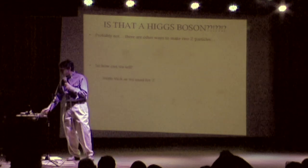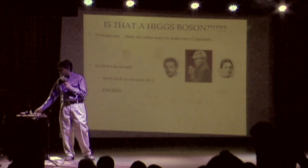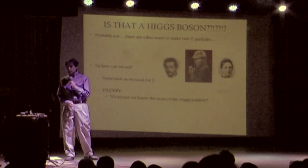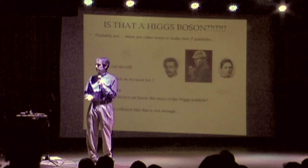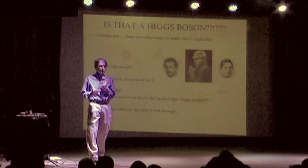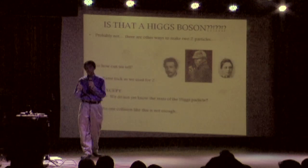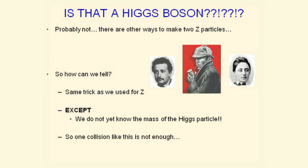So how are we going to figure it out? Well, we'd like to bring in the same team that was so successful for the Z particle and set them to work, and they would be able to do that except there's one problem, which is that we don't know the Higgs particle mass yet. So we can't play exactly the same trick, but we can play a similar trick. It's just that one collision is not enough. We need to see many collisions like that.